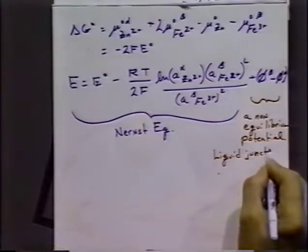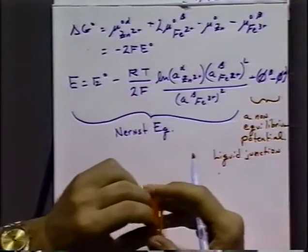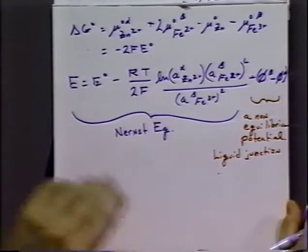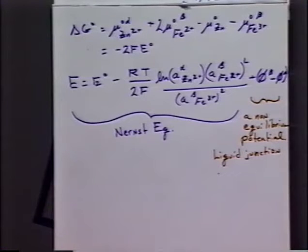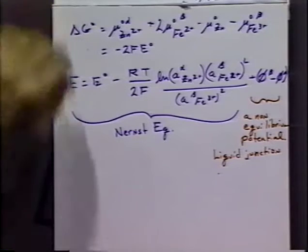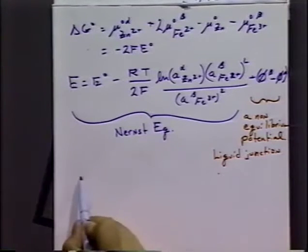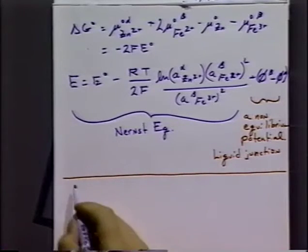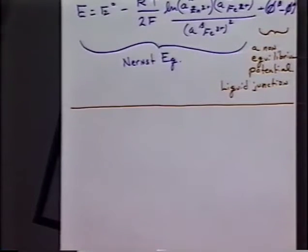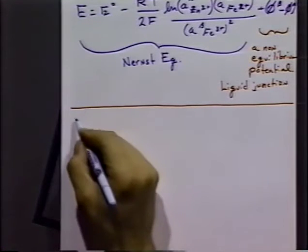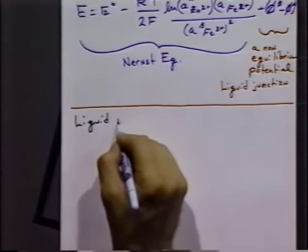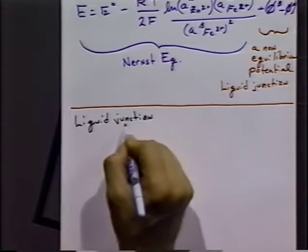So even when we can derive a cell potential, sometimes things crop in. We get these extra potentials that we have to take into account. So let's explore quickly the idea of a liquid junction potential. We're not going to go into a great deal of discussion about it, but I want to explore the idea of it just a little bit. There really are three types of liquid junctions that we have to worry about when we're measuring cell potentials.